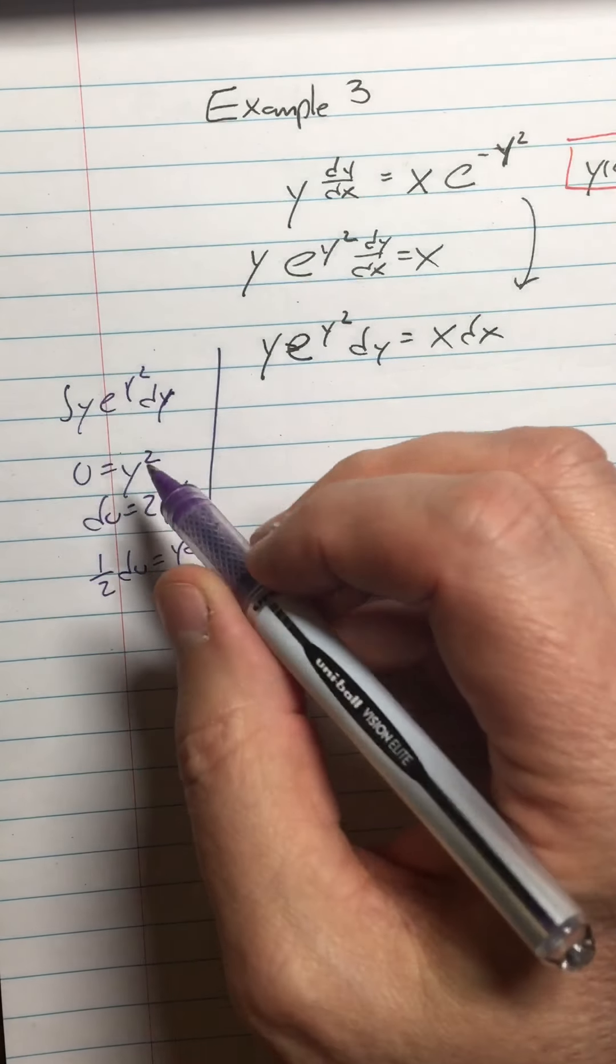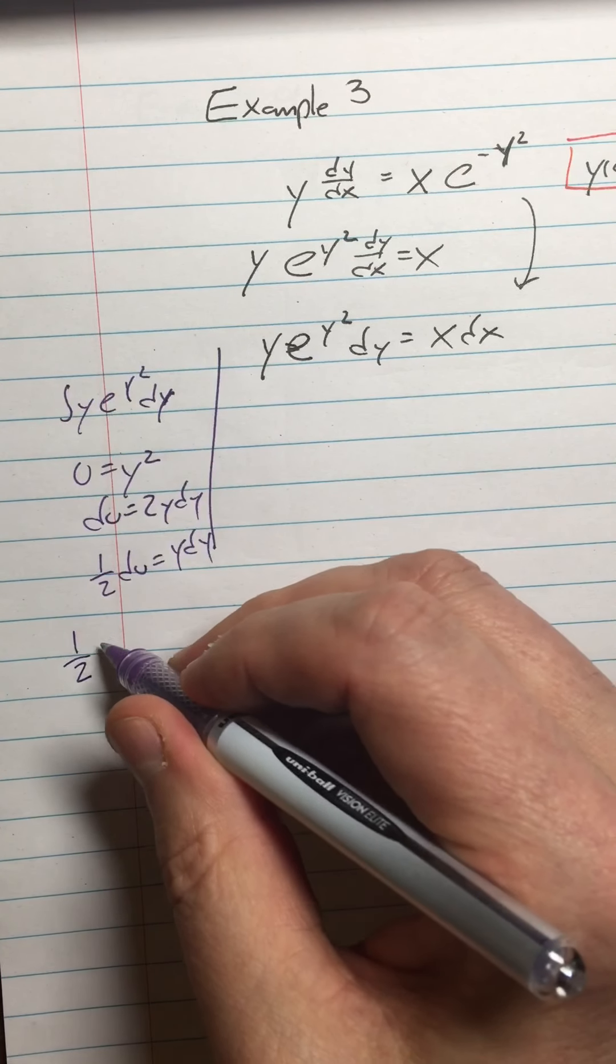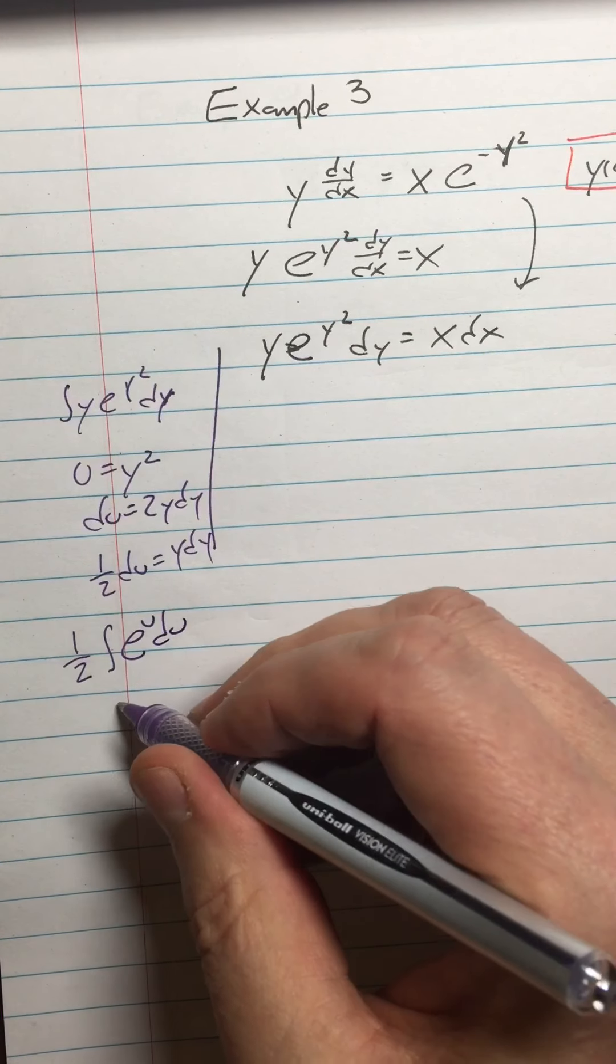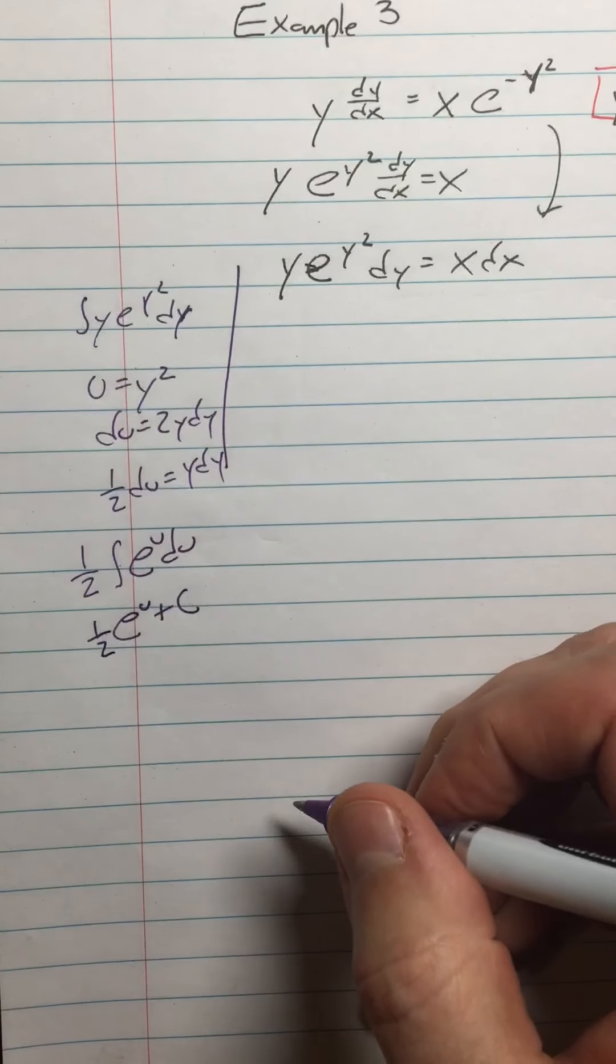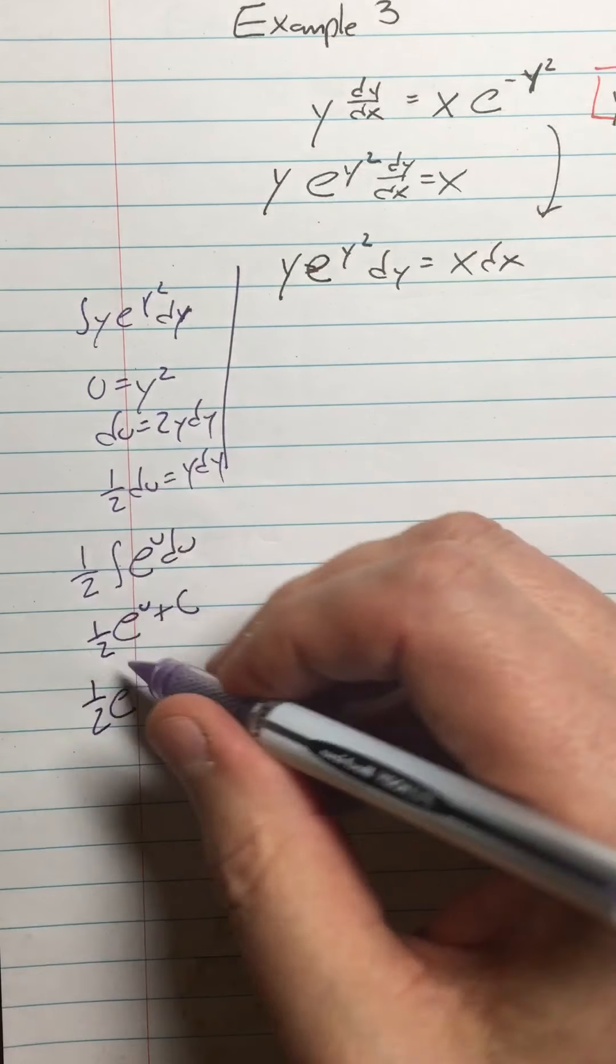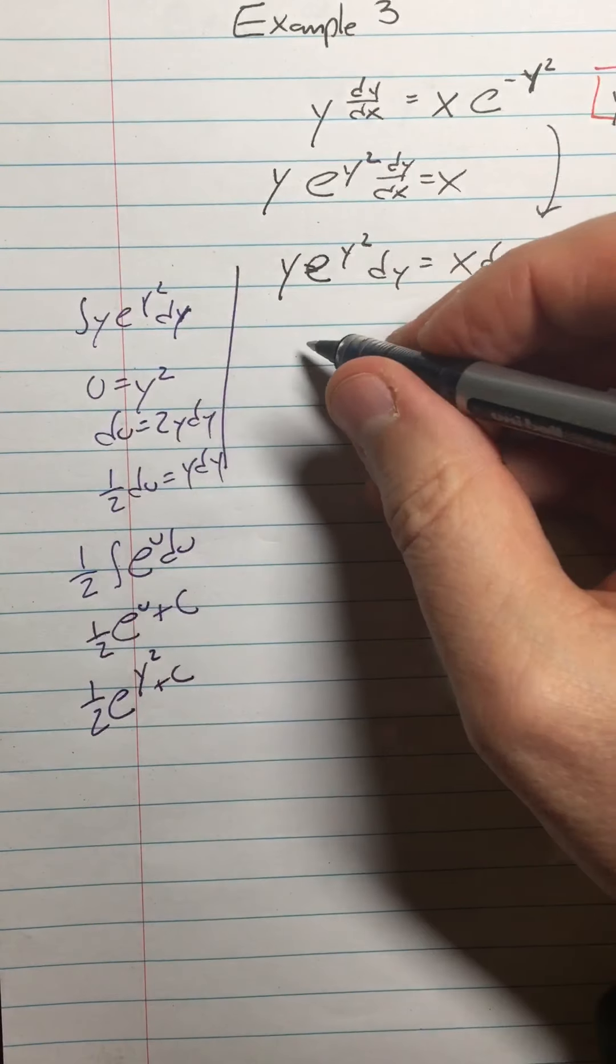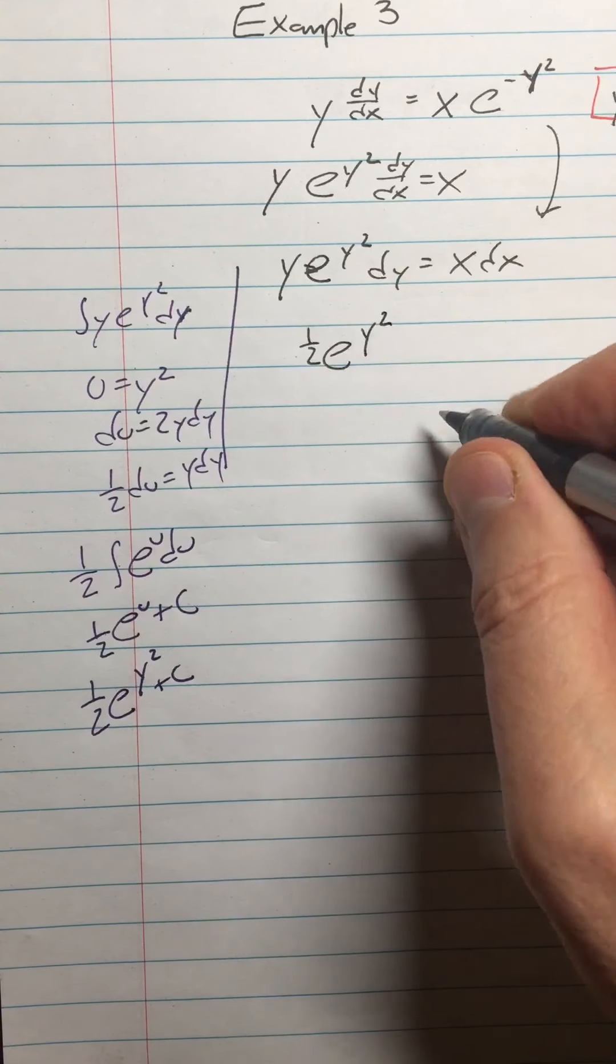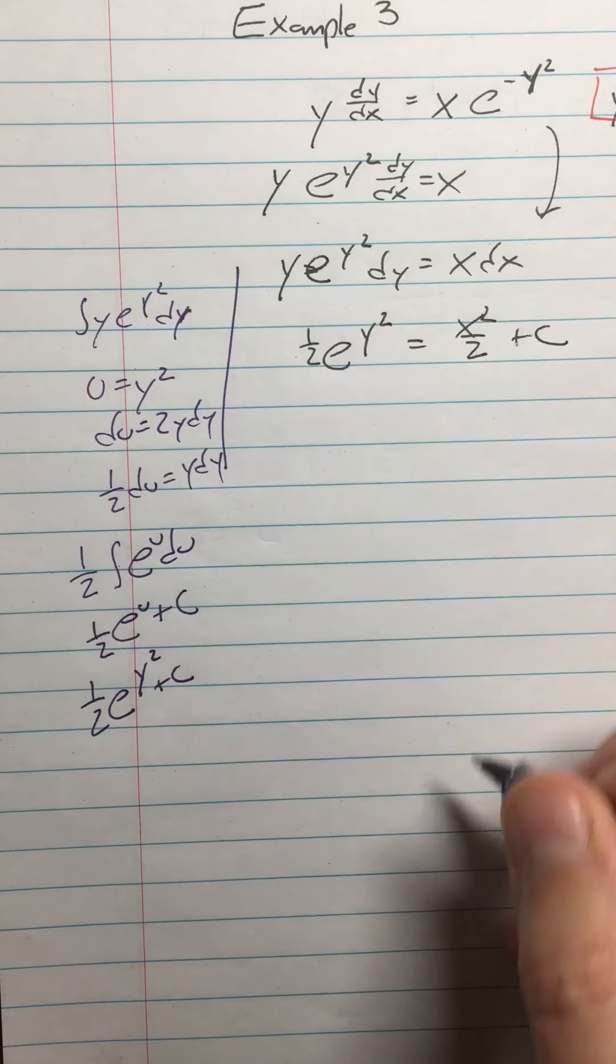So I can do one half du equals y dy. And why not dy, I always say. So my y dy can be replaced with one half du. So I'll put the one half outside integral. And then I'm going to have e to the u du. And then that integral is going to give me e to the u plus c. Don't lose the one half. And that e to the u is actually going to be e to the y squared plus c. It's probably not too hard to figure out directly that the antiderivative of this is going to be one half e to the y squared.